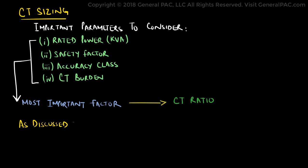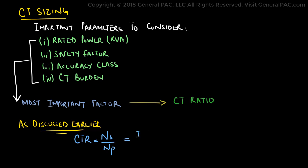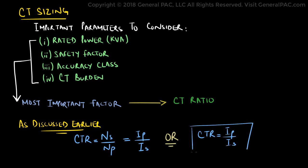As discussed in previous parts, the current transformer ratio can be defined as the secondary number of turns divided by the primary number of turns. In other words, we can also specify it as the current flowing through the primary winding divided by the current on the secondary winding.